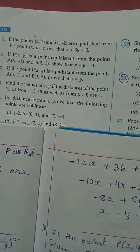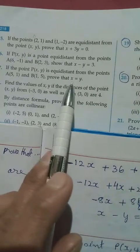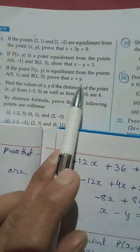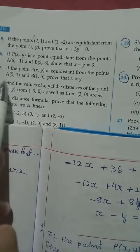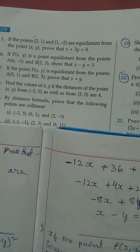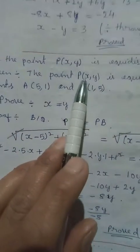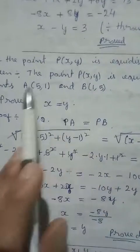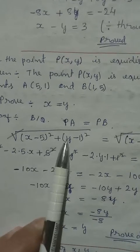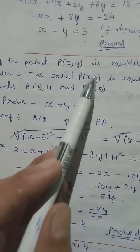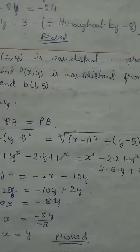Continuing to question number 7. More or less the same — we have P(x, y) equidistant from points A and B, and we have to prove that x equals y. Since equidistant means equal length from A and B, PA equals PB. Using the distance formula: PA with P at (x, y) and A at (5, 1) gives x minus 5 whole square plus y minus 1 whole square. PB with B at (1, 5) gives x minus 1 whole square plus y minus 5 whole square.